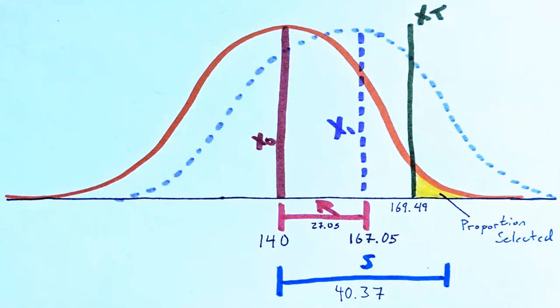Okay, so here we have all those numbers represented on the histogram. We can see our original mean of population, 140, and how in the next generation that moves over by 27.05. So then our next population, we have a mean of 167.05.